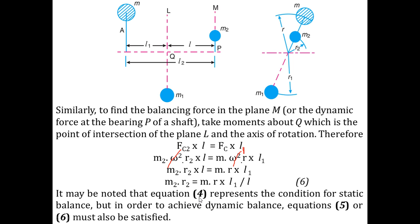Similar to Part A, here Equation 4 represents the condition of static balance, and Equations 5 and 6 represent the conditions for dynamic balancing. If Equation 4 is satisfied, the system is statically balanced. This is about Part B of Case 2. In the next video, we are going to see Case 3 in detail. Thank you.